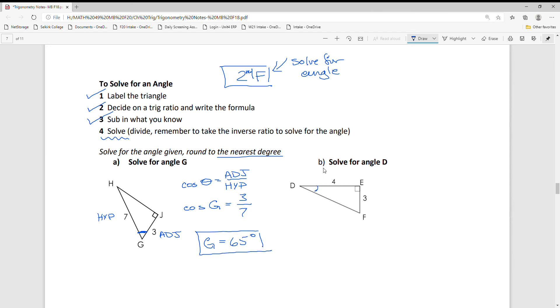Solving for angle D here. Labeling my triangle is always the first step. Choosing my trig ratio is always next. Subbing in what I know - in this case it's angle D, my opposite is 3, my adjacent is 4. Then really, it's just calculator work, popping that angle measurement out and rounding to the nearest degree.